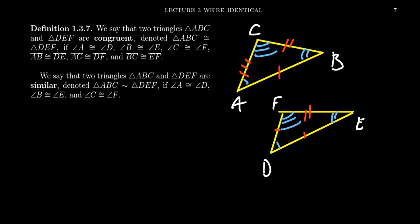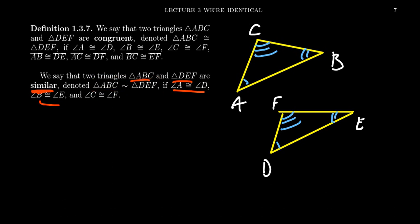A weaker notion than congruence is the idea of similarity. We say that triangles ABC and DEF are similar if just the angles are congruent to each other — so if angle A is congruent to angle D, angle B is congruent to angle E, and angle C is congruent to angle F, we say the triangles are similar to each other. We don't use the usual congruent symbol; we just draw a little squiggle to say that two triangles are similar.